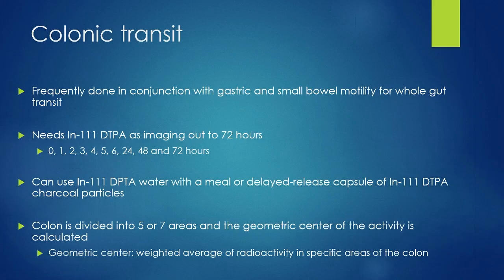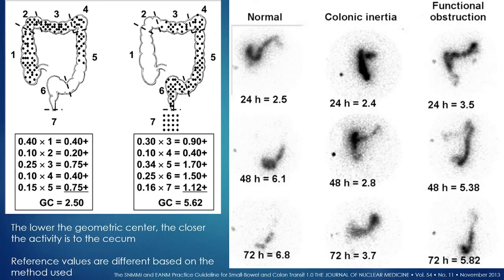From 24, 48, and 72-hour imaging, we derive data by dividing the colon into five or seven segments — the two most well-described methods — and determining the geometric center of activity. The geometric center is a weighted average of radioactivity in specific areas of the colon. Smaller numbers mean activity is closer to the cecum, and things should move from the cecum outward in a relatively orderly fashion.